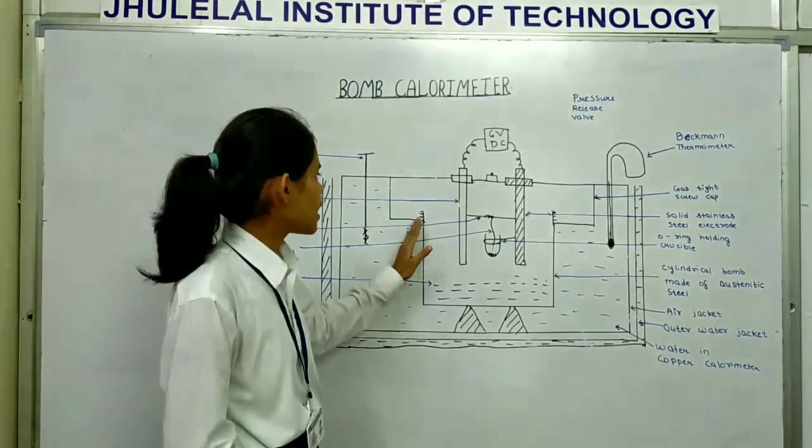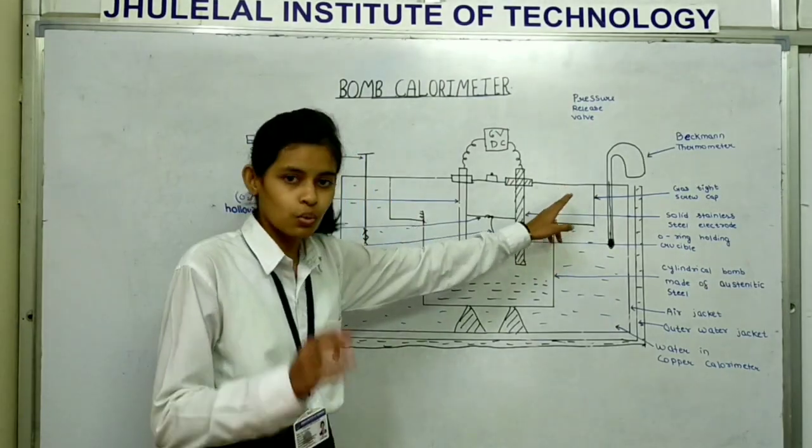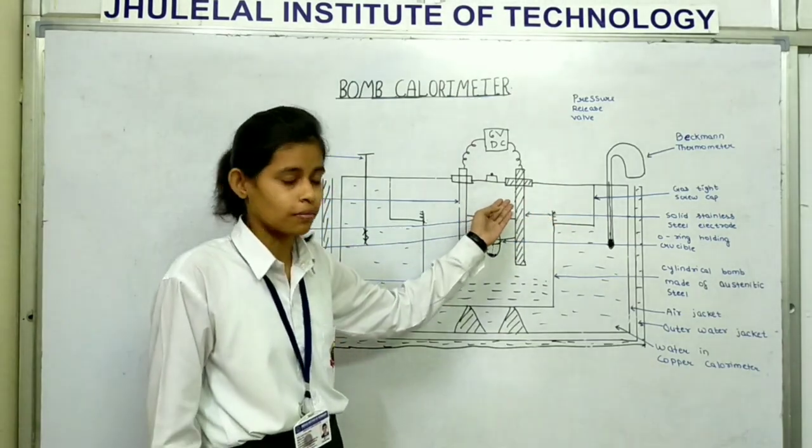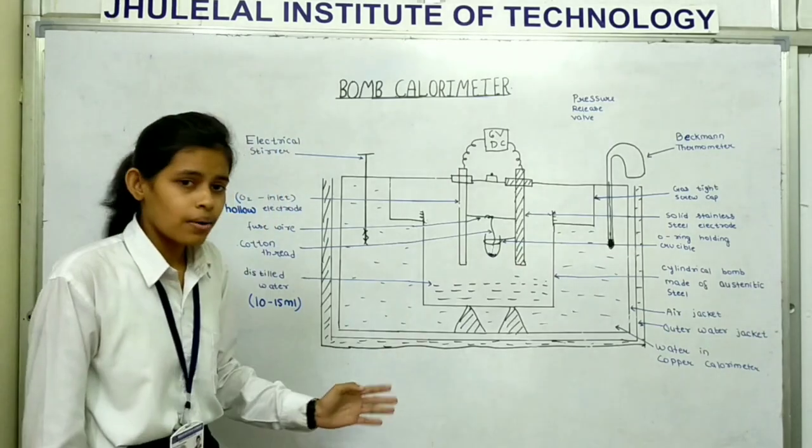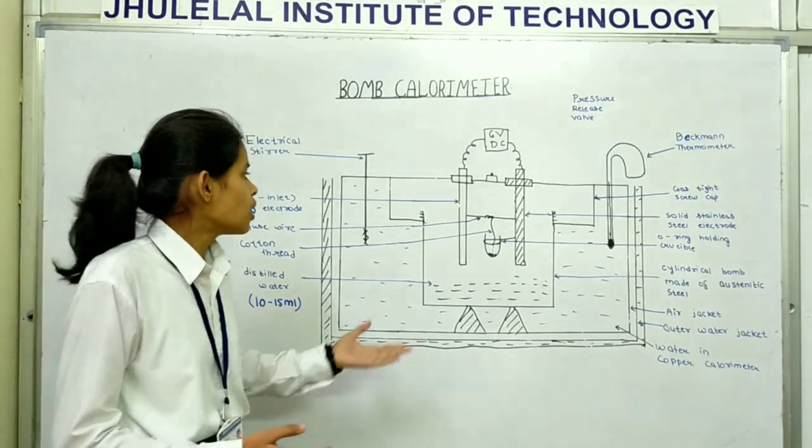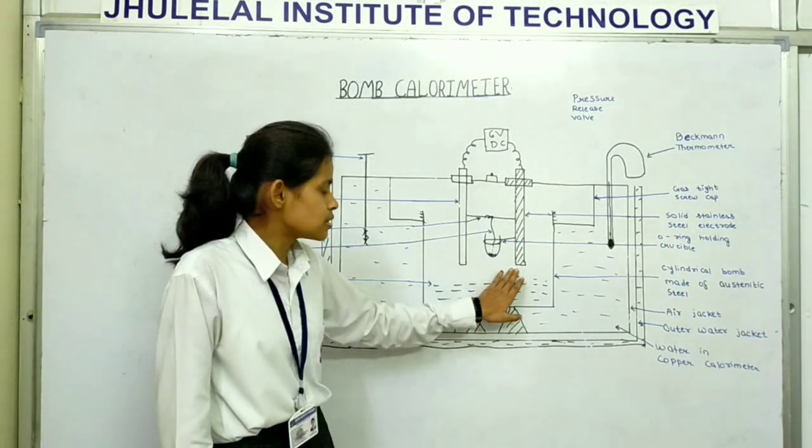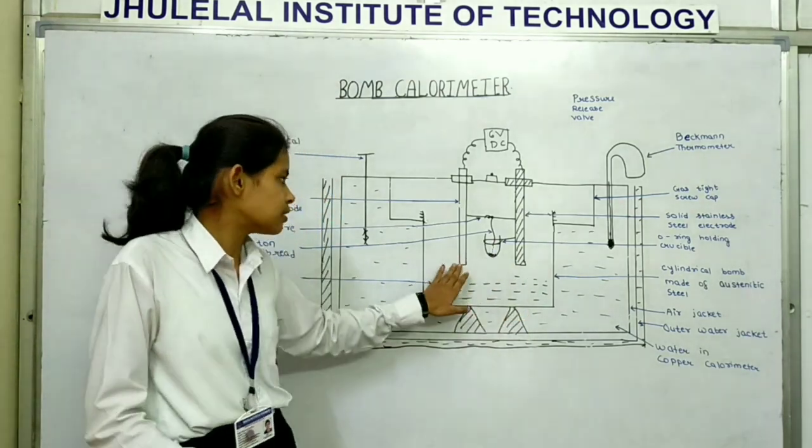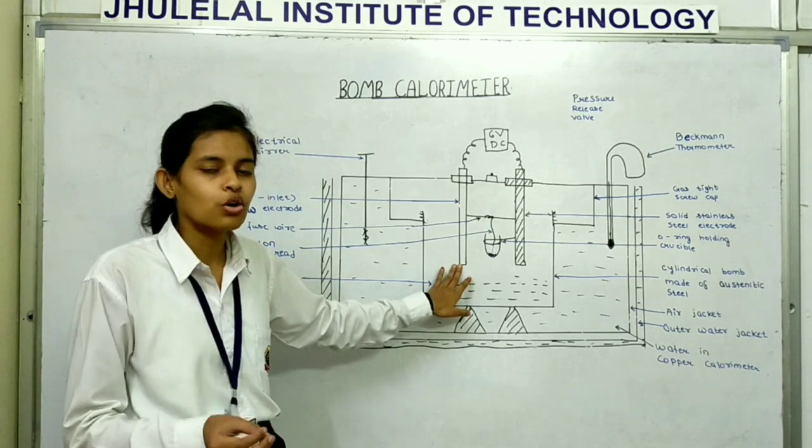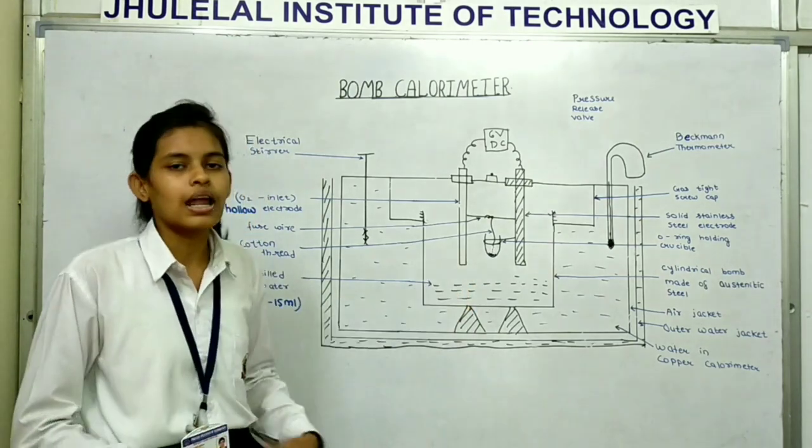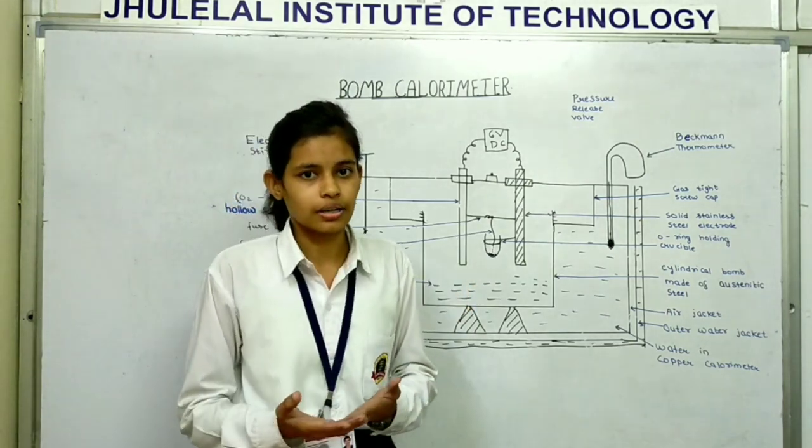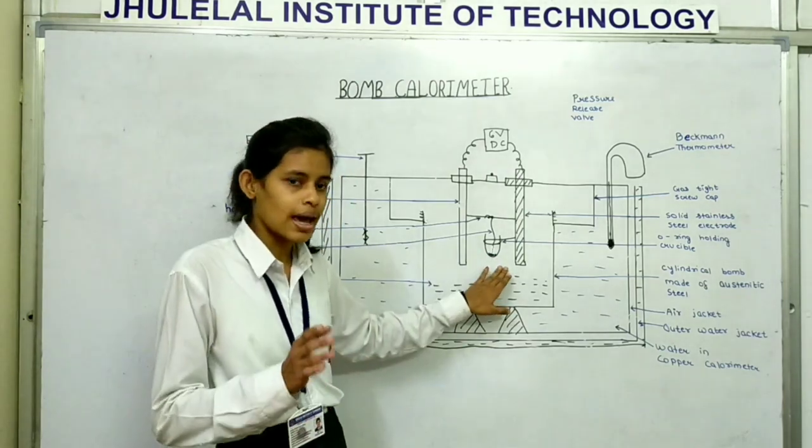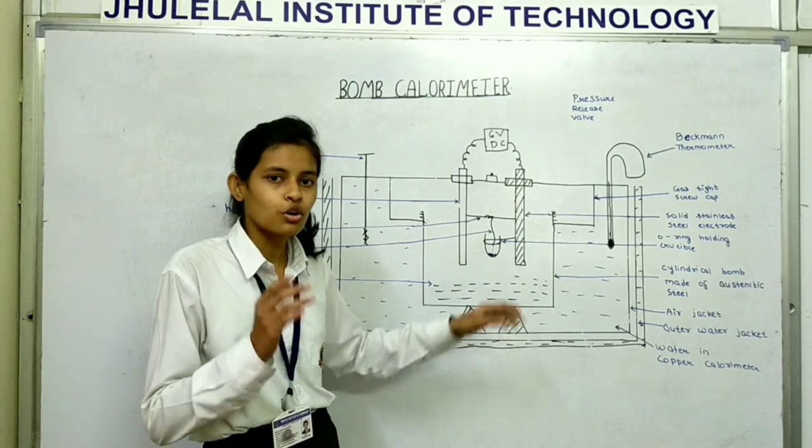The bomb also has two electrodes. One is made up of solid stainless steel electrode and the another is made up of hollow tube electrode which allows the oxygen inlet. One electrode has over-informed crucible.